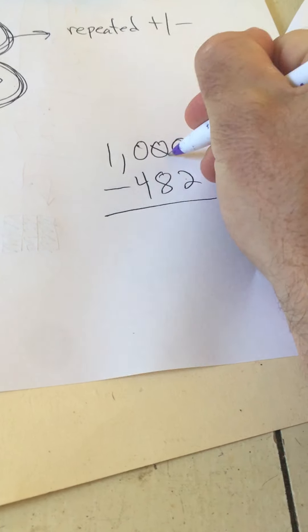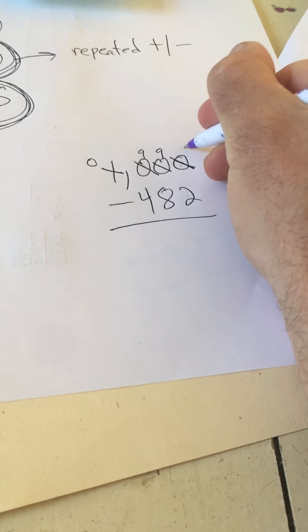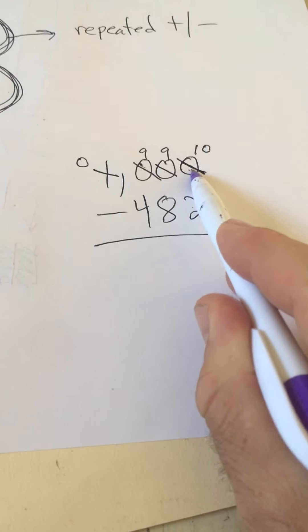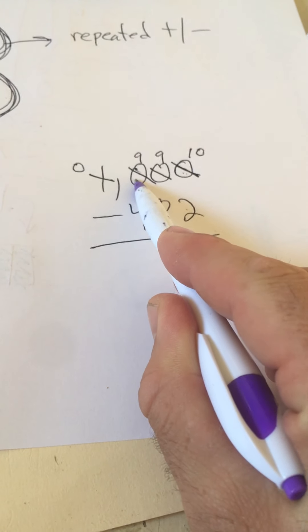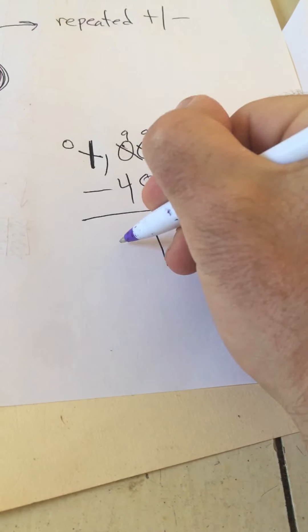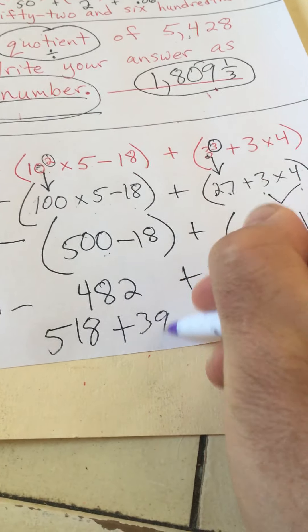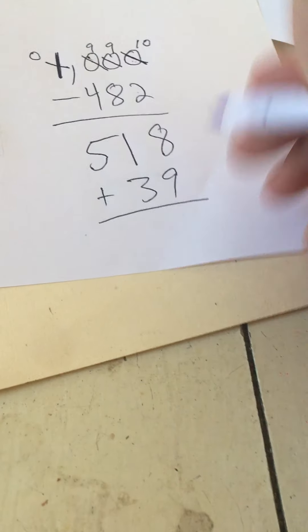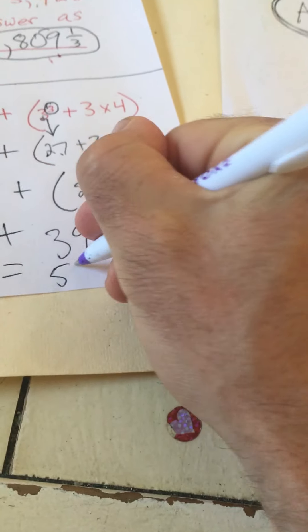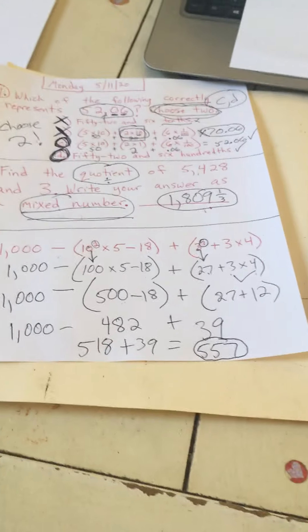So now we have 1,000 minus 482. You can't do 0 minus 2. So you borrow across these zeros until you get to a whole number. And the zeros we went across, we have to turn into 9. And the original one becomes 10. Let me know if you need help with this. I'm just afraid of running out of time on my camera. But we've done quite a bit of this. The original one we couldn't do becomes 10. The other ones we had to go across become 9's until you get to a number that's not a 0. You take one away from that. 10 minus 2 is 8. 9 minus 8 is 1. 9 minus 4 is 5. So this is 518. And then we have to do plus 39. And that will be our final answer. 518 plus 39. And we get an answer of 557.